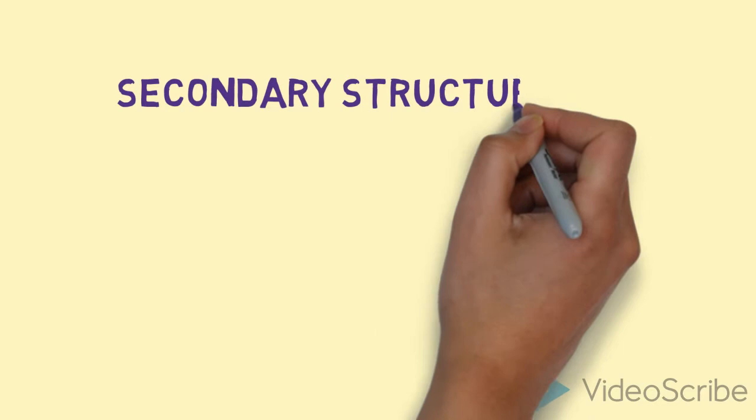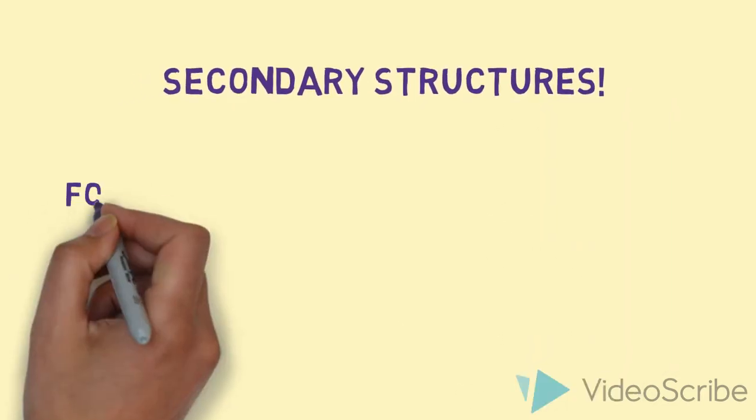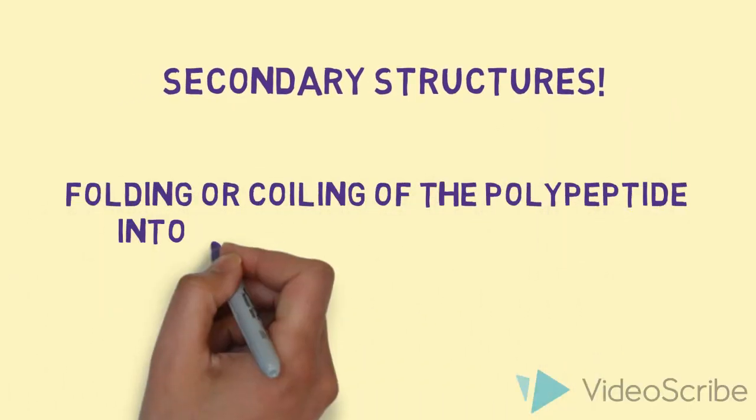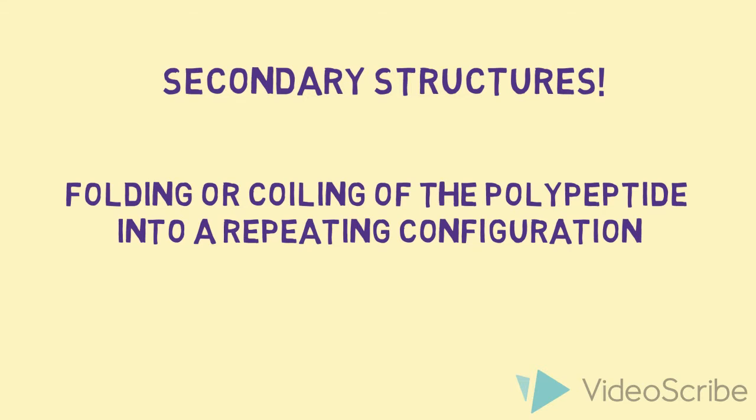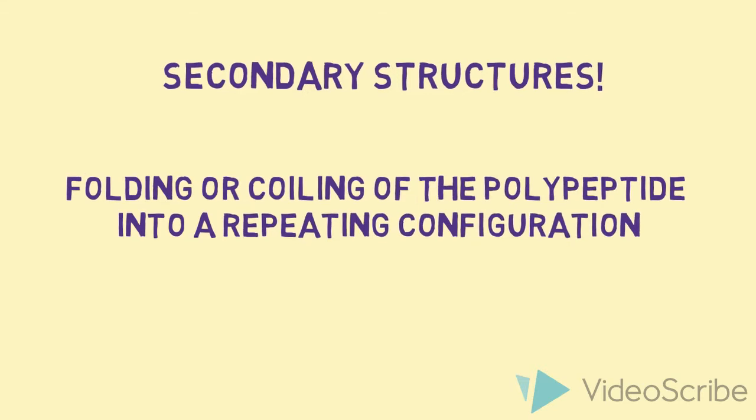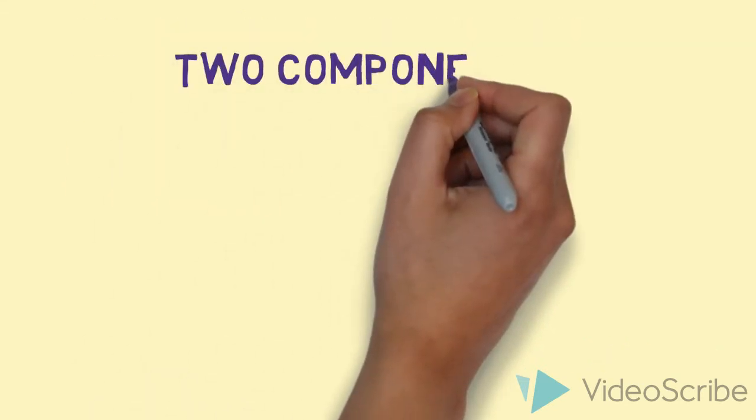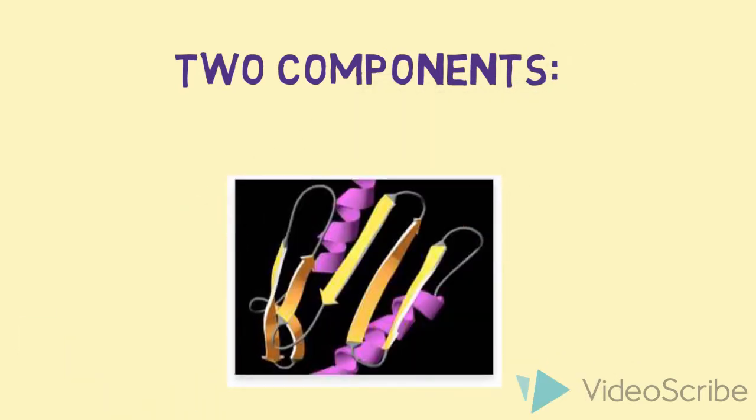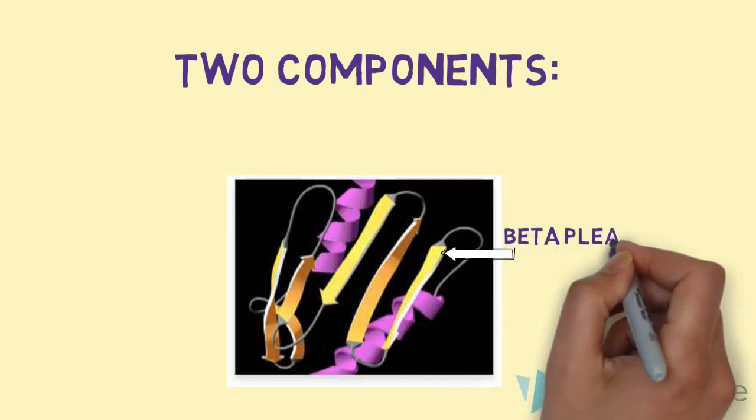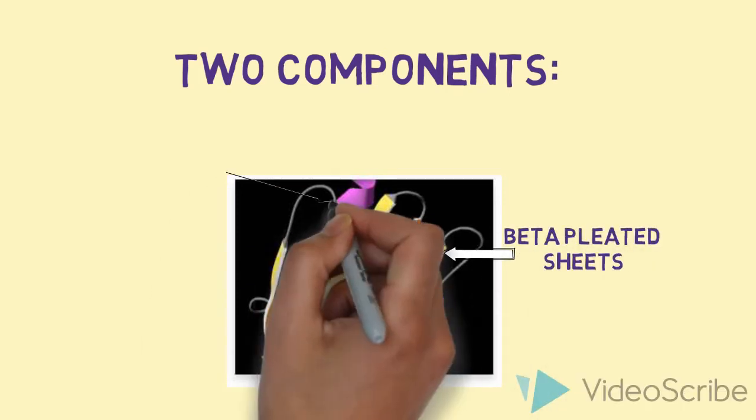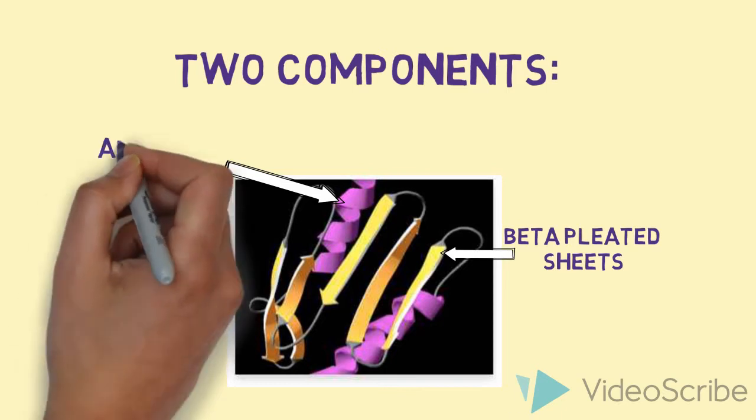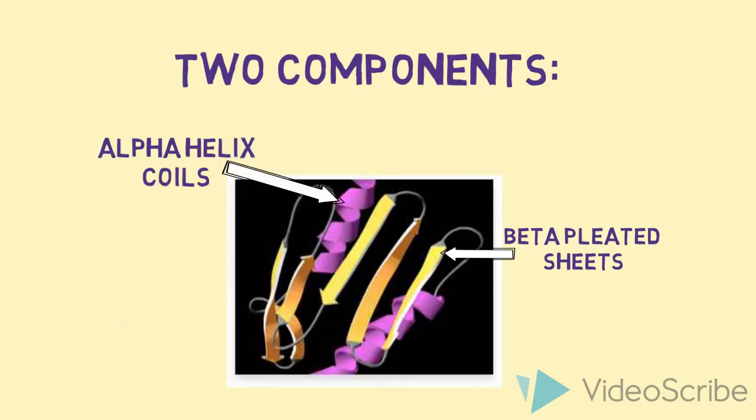Secondary structures are the next structure after primary. It's the folding or coiling of the polypeptide into repeating configurations. The two configurations are displayed in this picture. The yellow are beta-pleated sheets, and the purple coils are alpha-helix coils. Each of these are part of the secondary structure.